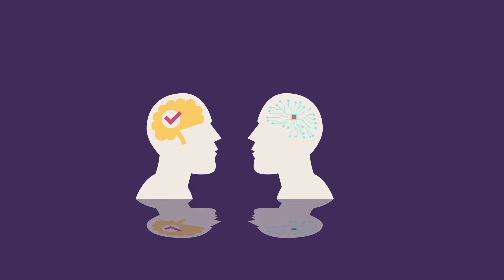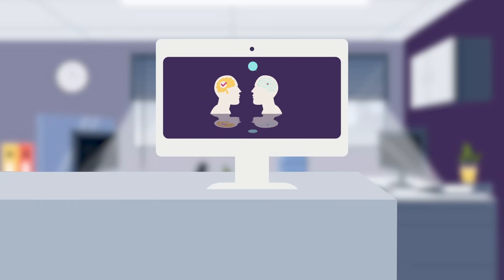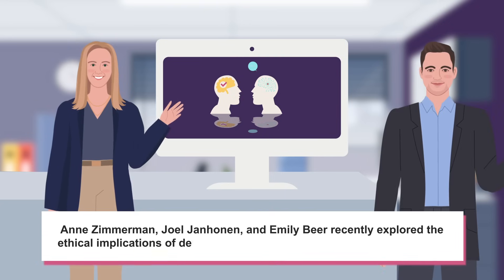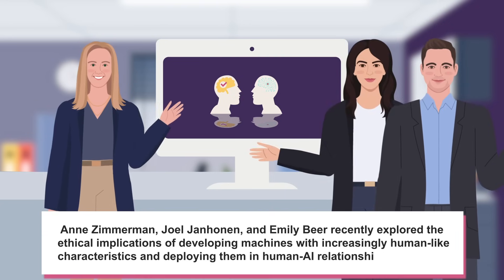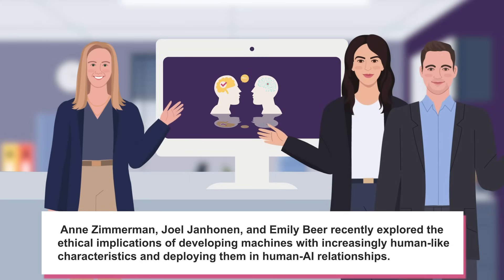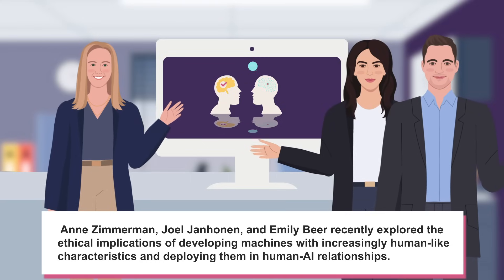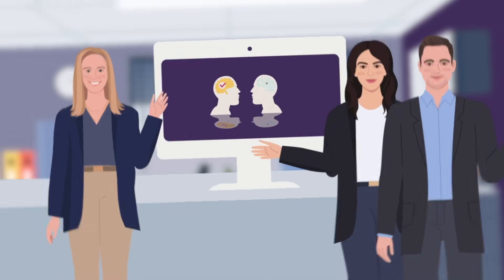While AI systems are useful, they also have a darker side that we do not fully grasp yet. Ann Zimmerman, Yoel Janhonen, and Emily Beer recently explored the ethical implications of developing machines with increasingly human-like characteristics and deploying them in human-AI relationships.